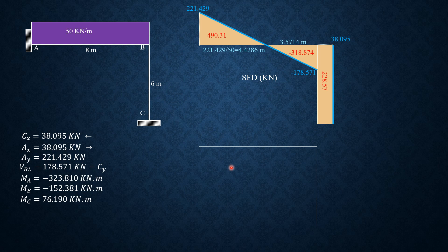For the bending moment diagram, moment at A is negative 323.81, so it's below. Then plus this area positive decreasing. So negative 323.81 plus 490.31, which is one-half of 4.4286 times 221.429.